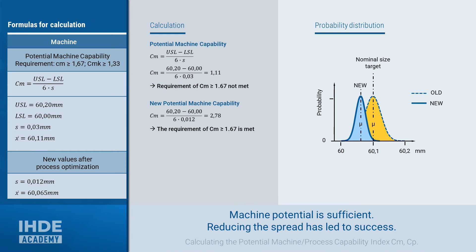Let's assume that some measures have been taken to reduce the spread of the machine. Such measures could be, for example, replacing the machine with a more suitable one, reducing play in relevant bearings, keeping the ambient temperature constant, or measures to reduce vibrations, and so on. After the improvement measures have been implemented, another 100 samples were produced and the diameters measured. The new values can be found in the table. As can be seen, the spread has been reduced, which is reflected in the new standard deviation of just 0.012 mm.